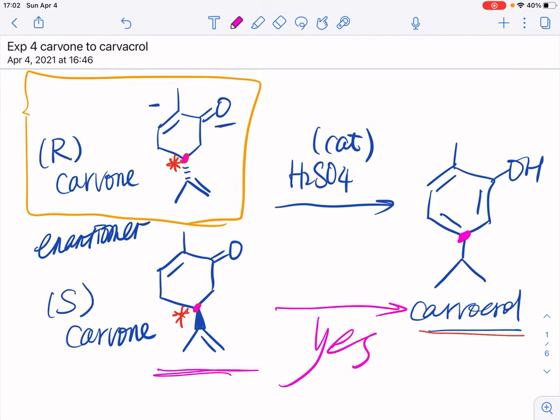Which means that either way, you start with R or S-isomer, you will have the same products since you're losing the stereospecificity. And also, if you're not sure whether it's going to the same product or not, try write out the mechanism. That's going to help you figure out if it's going towards the same direction or not.